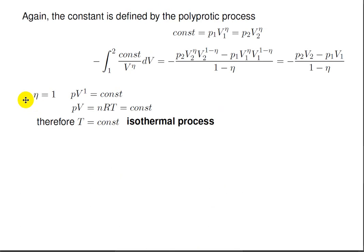Let's look at the values that eta can assume. If eta is 1, then P times V to the power of 1 is a constant. That's our process. So PV equals nRT, if we use the ideal gas law, yields a constant because PV to the power of 1 yields a constant. Therefore, temperature must be constant. So eta equals 1 becomes an isothermal process.